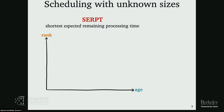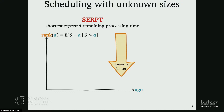The way I like to think about this policy is that it assigns each job a rank or priority as a function of how long I've been serving it — with the convention that lower rank is better. A job's rank is its expected remaining size conditional on having reached age A, conditioning on the fact that the job has reached age A and thus isn't smaller than it.